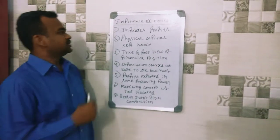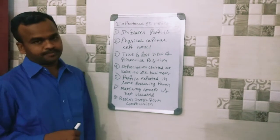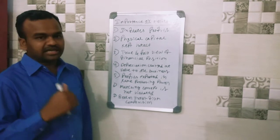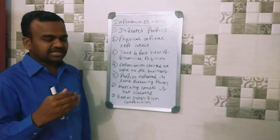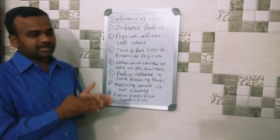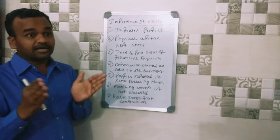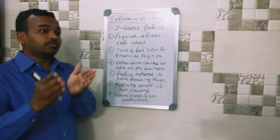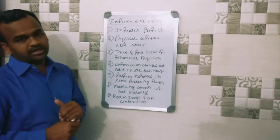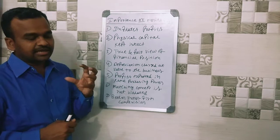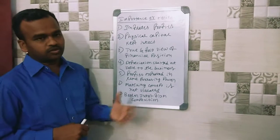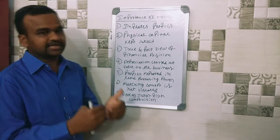Look at the first point. First point is: inflated profits. Inflation accounting — profits are inflated with inflation adjustment. Historical profits in the market versus current market value and currency value in the market. Inflation accounting gives us inflation-adjusted profits.